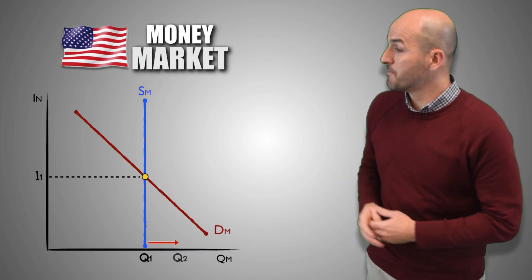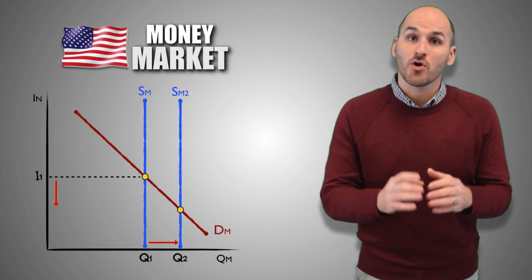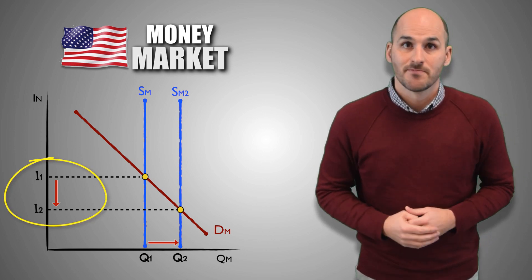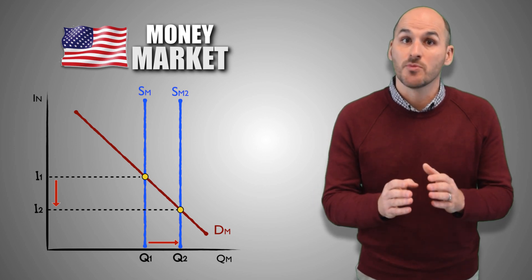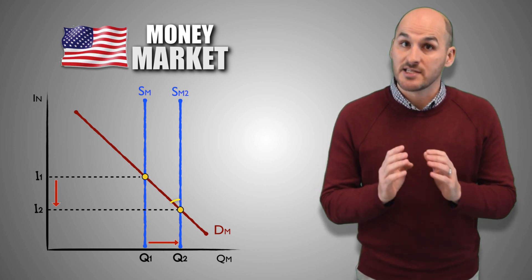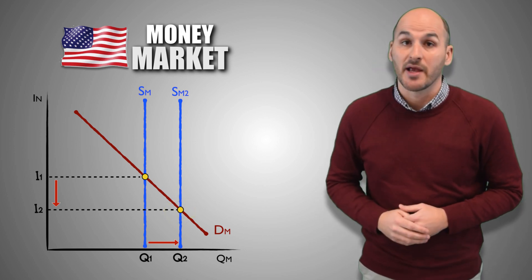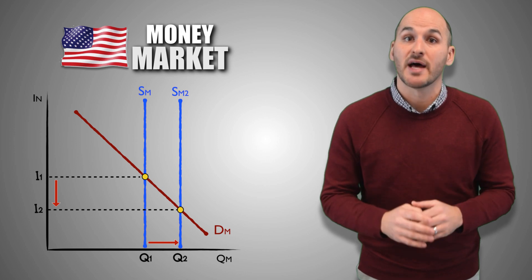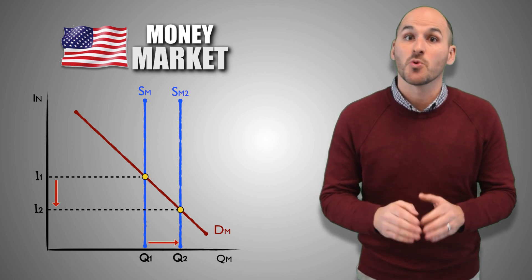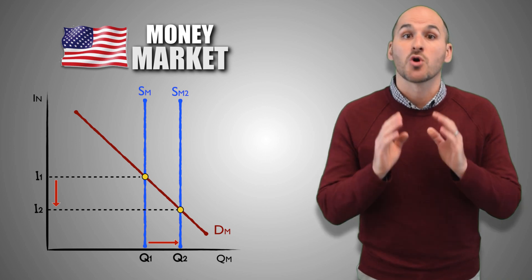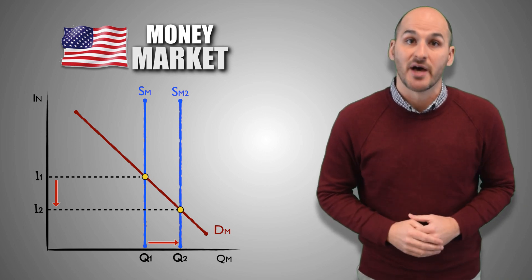Now suppose the Federal Reserve decides it is appropriate to release more M1 funds into the money market, causing the money supply to increase. With greater quantities of money available, the nominal interest rate will decrease. To take advantage of the lower rate, consumers and borrowers demand a greater quantity of money, establishing a new equilibrium. This lower nominal interest rate means it is less expensive to borrow, so firms increase their investment spending, causing aggregate demand to increase.